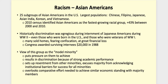Moving on to the Asian American population — there are 25 subgroups of Asian Americans in the United States. The largest populations come from China, the Philippines, Japan, India, Korea, and Vietnam. The last census identified that Asian Americans were the fastest growing racial group in the United States, increasing by 43% between the last two censuses.